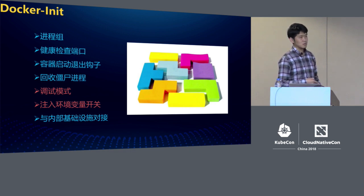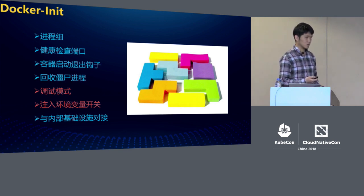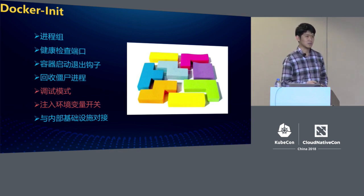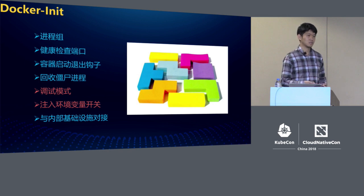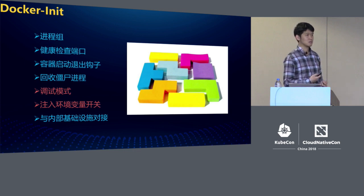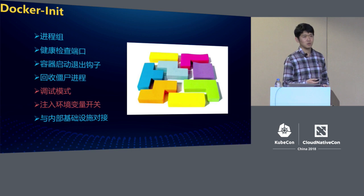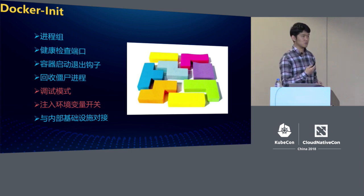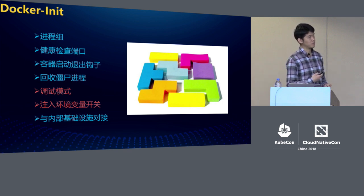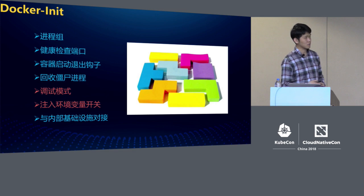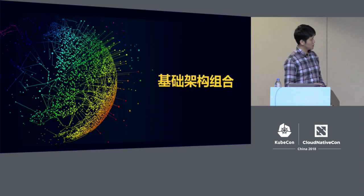We have a debug mode. Inside the container, in this dynamic environment, when a user releases a task or job, if due to environment or other issues the process couldn't be started, debugging becomes quite difficult. So we designed a debug mode — it's quite simple. When running a test, it's like an empty shell: you run the image and put it in the cluster without the actual process. This is the debug model we designed.